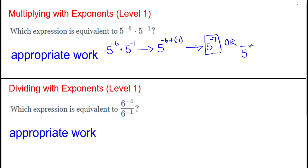Because five to the negative seven is in the numerator, I could move it to the denominator, and that negative exponent would change to a positive exponent. Don't forget to mark the numerator with a one. Delta Math sometimes has you figure out what five multiplied by itself seven times will be, but most of the time the exponents can be pretty small because otherwise the numbers get really big.